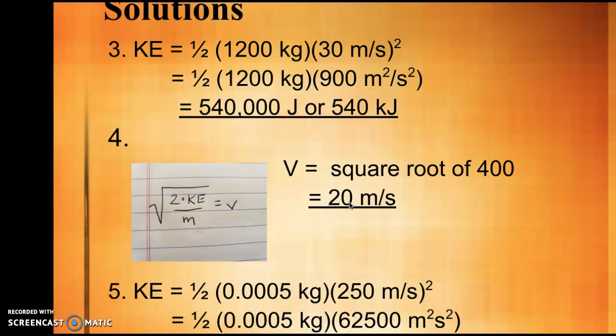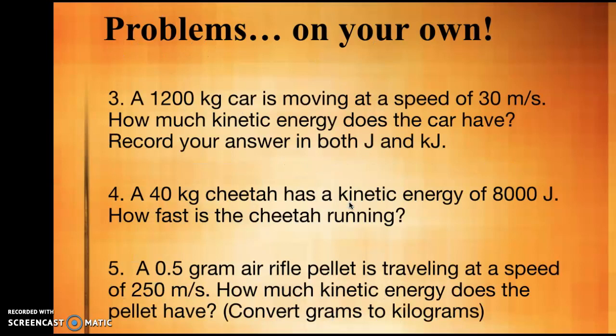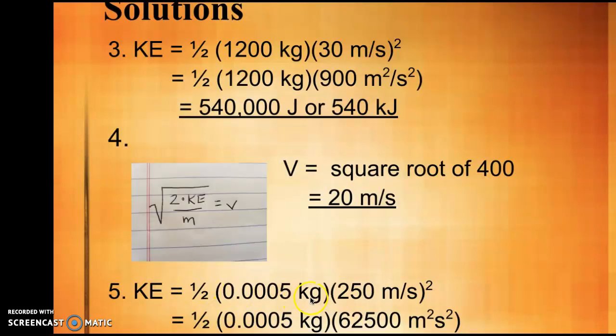The last one there, you're just solving for kinetic energy again. The only monkey wrench I threw at you is that I listed the mass in grams, but we always need to be in kilograms. So the first step is to move that decimal place over three spots to make sure that you have the correct mass in kilograms. From there, it's just the same as before. Square your velocity first. Multiply by the mass, and then divide everything by two. You should get a decimal. You can round that decimal to 15.6 joules. So check your work. See where you might have made a misstep. I imagine some people forget to convert the mass.